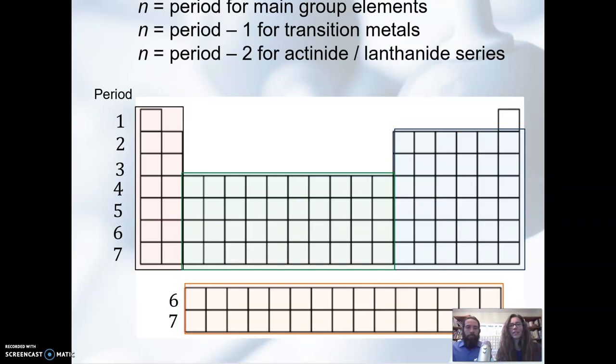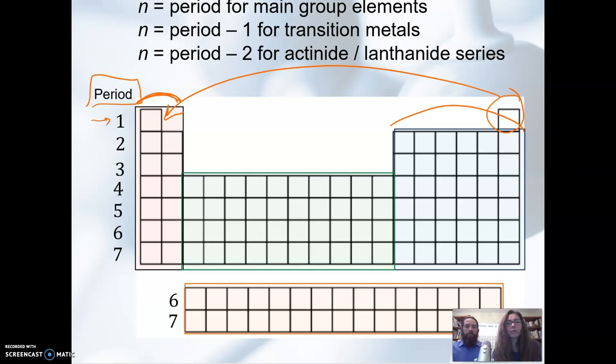So taking this blank periodic table here, the important part for n is knowing what the period number is. And you should understand and you should recognize this term main group elements. The main group elements are the first two groups and the last six. So when we're talking about n, n equals the period number for the main group elements.